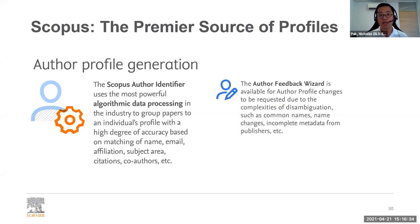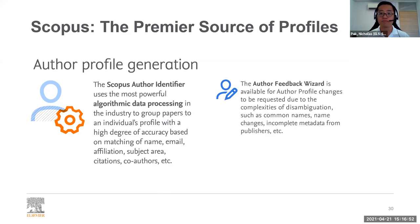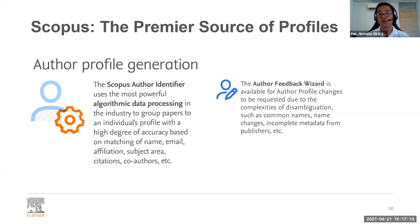When a paper is published in a journal indexed on Scopus, the publisher submits an abstract and citation record to us. From this we accrue the data and generate the profile. We've also included a feedback wizard so you can change and edit your profile — this is helpful because sometimes names are common, names change, or there is incomplete metadata. We want to make life easier for you to manage it.